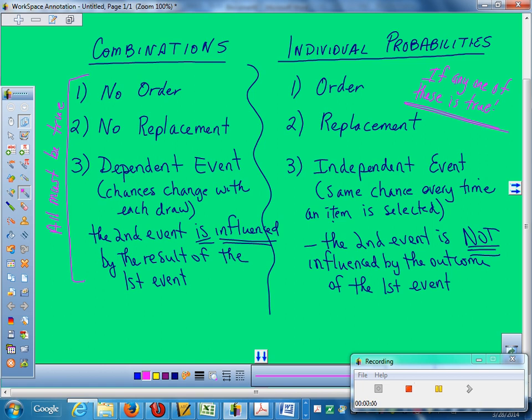Live and die by these rules. All must be true. Over there, if any one of them is true, you do individuals.